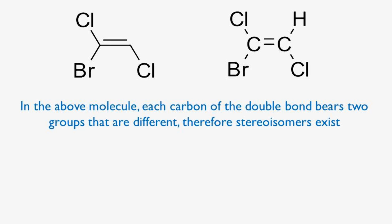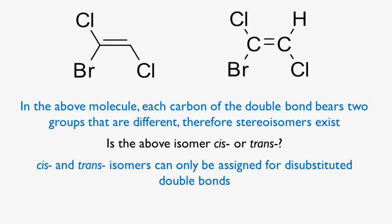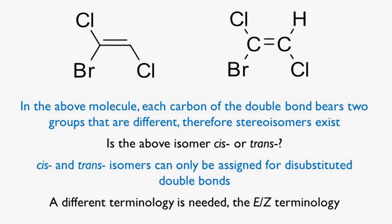Rule eight. In this molecule, each carbon of the double bond bears two groups that are different — the left carbon has a bromine and a chlorine, the right carbon has a chlorine and a hydrogen. Therefore, stereoisomerism does exist. But is this molecule cis or trans? Well, cis and trans terminology can only be used for disubstituted double bonds. So what do we use for trisubstituted or tetrasubstituted double bonds? For those cases — and also optionally for disubstituted ones — we use the E/Z terminology.